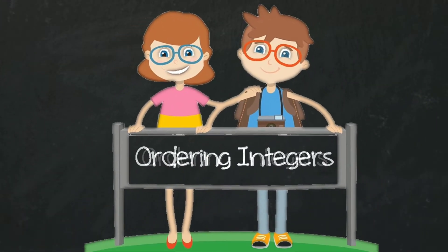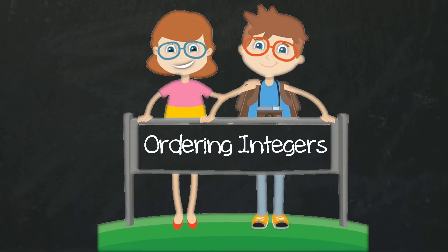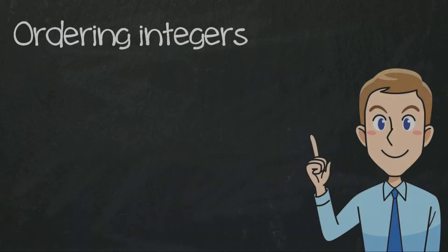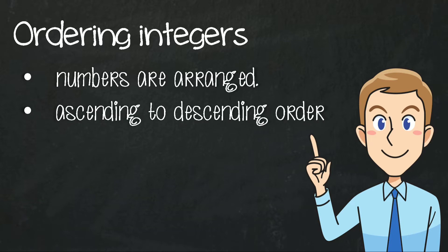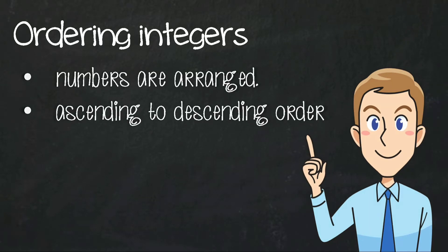Ordering integers refers to a particular sequence in which numbers are arranged. It also refers to an arrangement of integer numbers in ascending or descending order.